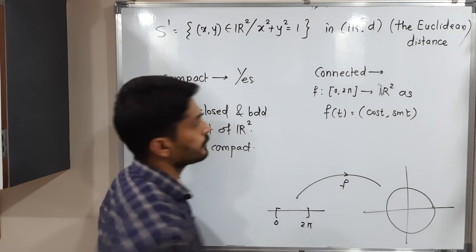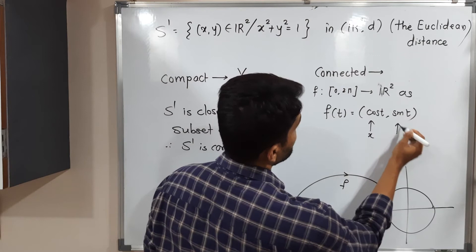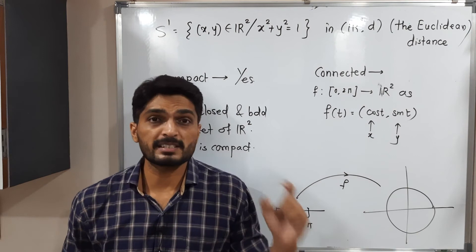What is x component? cos t. What is y component? sine t. So x square plus y square, that means cos square plus sine square is 1. So that means this set, cos t and sine t, satisfy this condition.